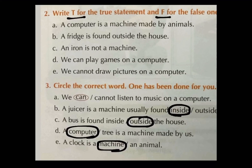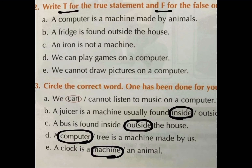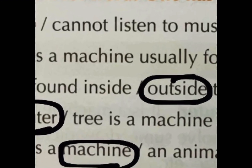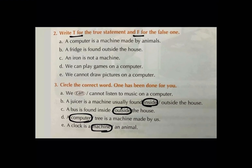D statement: A computer or a tree is a machine made by us. Kia tree ek machine hai? No. Toh computer ek machine hai? Yes. So, computer is a machine made by us. Hum 'computer' ko circle karin ge. Last statement: A clock is a machine or an animal? Jis ke oopper hum time dekhte hai. Cell se chalti hai na clock. So, it is a machine. Hum 'machine' ko circle karin ge. This is all about exercise number 2 and 3.